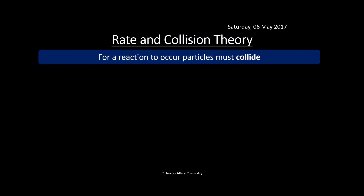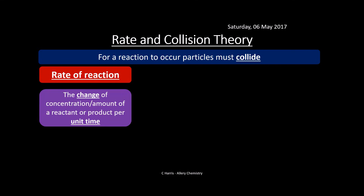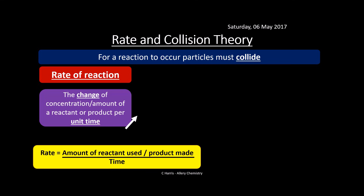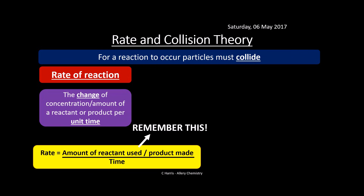We're going to look at rate and collision theory. Kinetics is to do with rates of reaction — how fast things go. For a reaction to occur, particles must collide. Rate is the change in concentration or the amount of a reactant or product per unit time. Essentially, rate is the amount of reactant used or product made divided by time. You've got to remember this — it's really important.